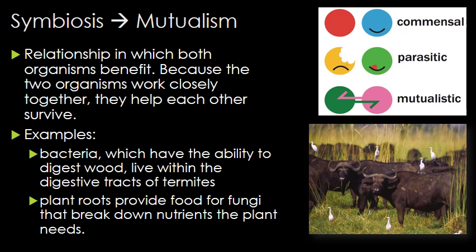Mutualism is a symbiotic relationship in which both organisms benefit. Because the two organisms work closely together, they help each other survive. For example, bacteria which have the ability to digest wood live within the digestive tracts of termites. Plant roots provide food for fungi that break down nutrients the plants need. Cattle egrets eat insects off of cattle. So in mutualism, both organisms involved benefit.